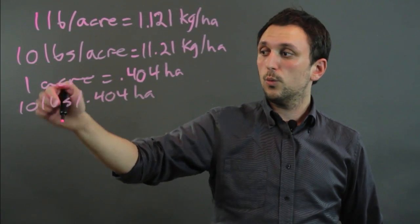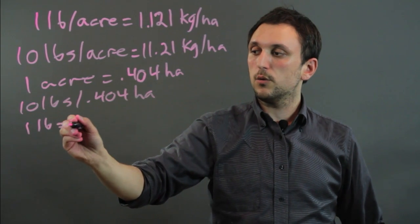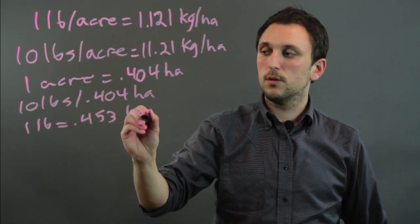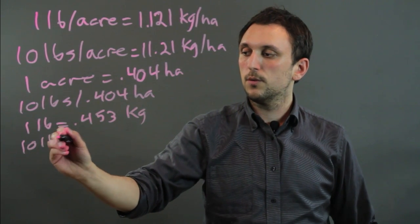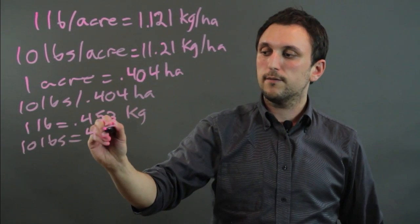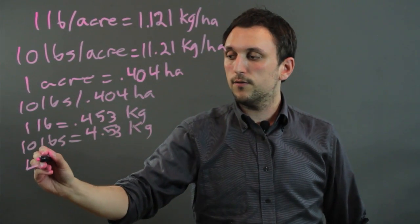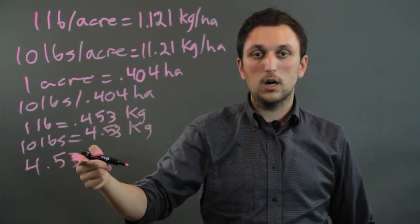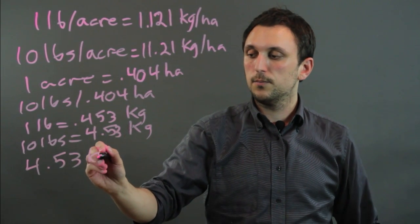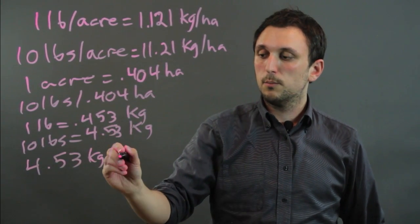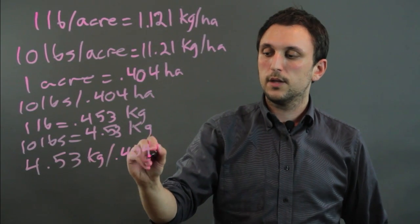Then we say one pound equals 0.453 kilograms. So that means that 10 pounds would be 4.53 kilograms. So now we have a fully metric conversion: 4.53 kilograms per 0.404 hectares.